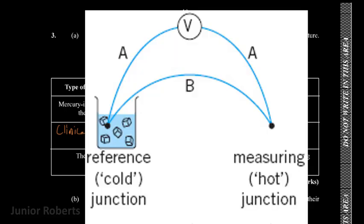The thermocouple is a very unique type of thermometer made from two different metals connected in a loop. One of those metals is kept at a very low temperature, usually around zero degrees, and the other wire is used to measure the temperature. The thermocouple is very sensitive because any difference in the temperatures of the two metals will allow a current to flow, and the value of that current can be used to determine the temperature difference between the two wires.